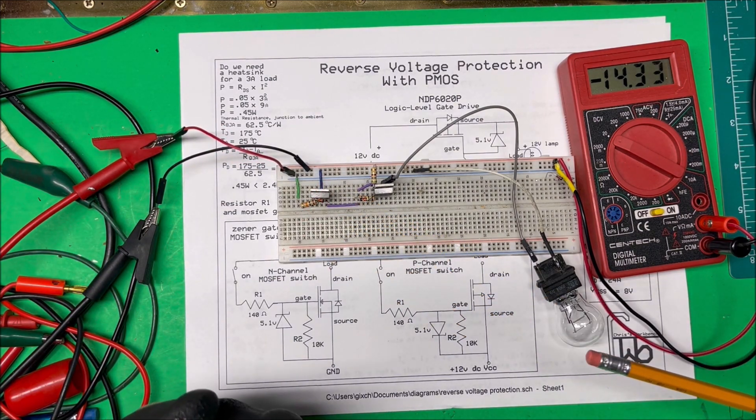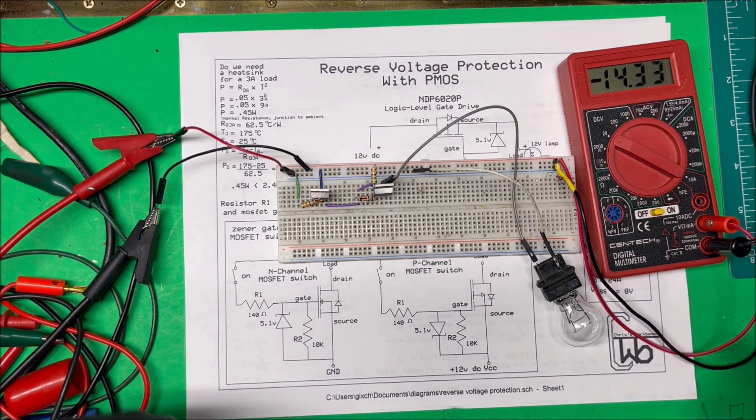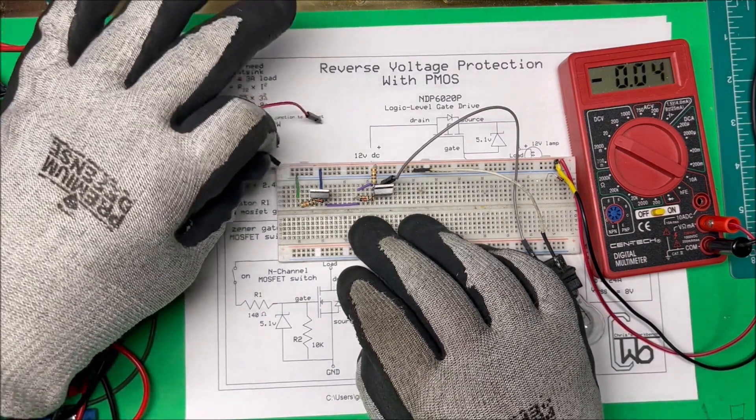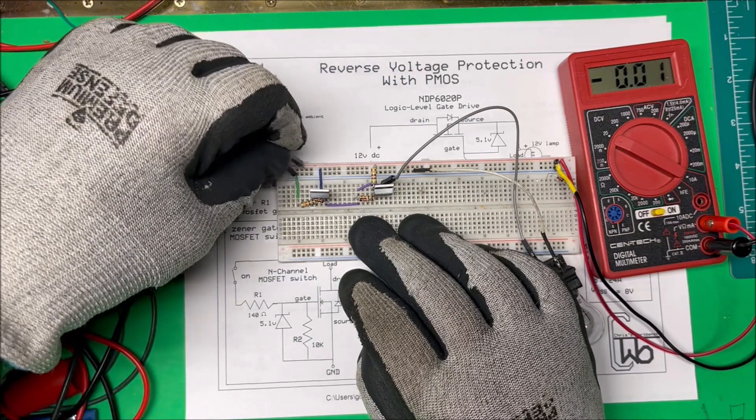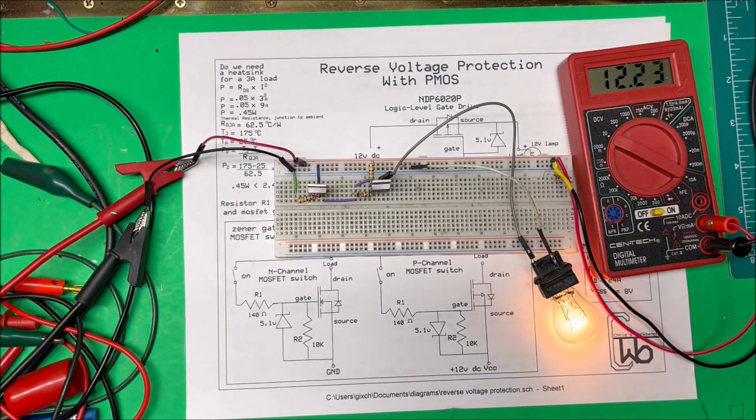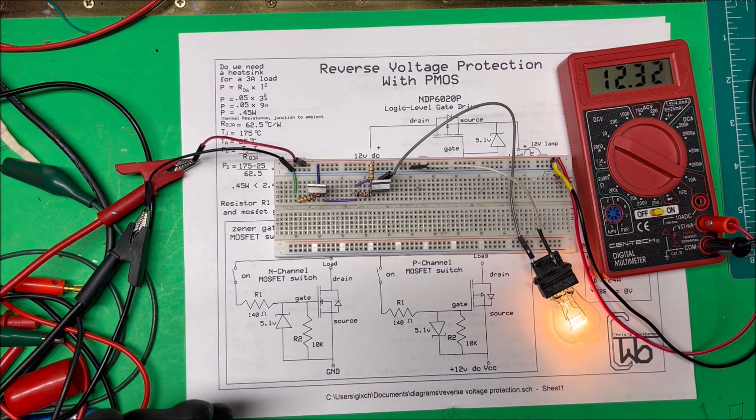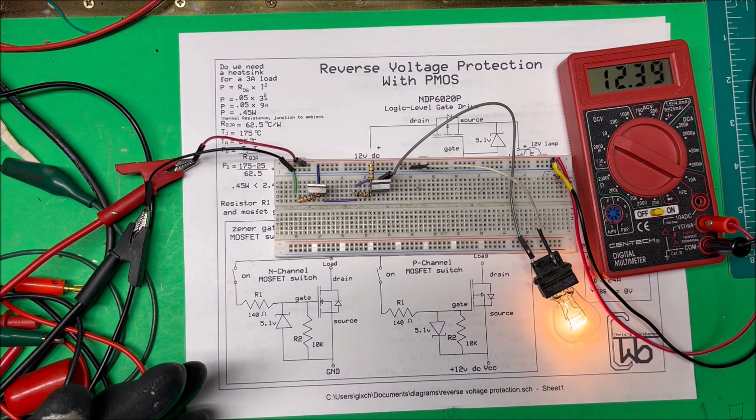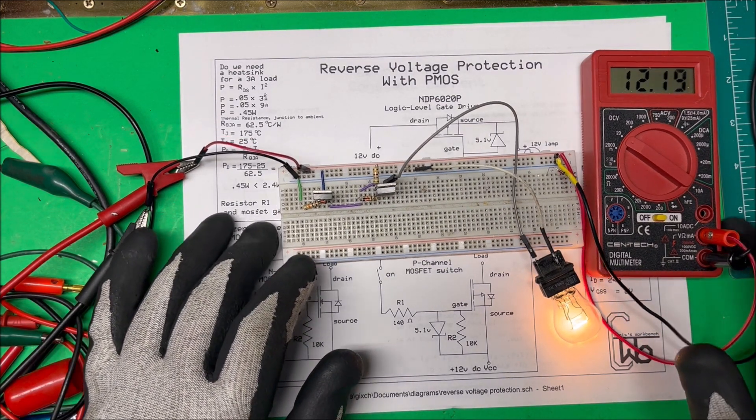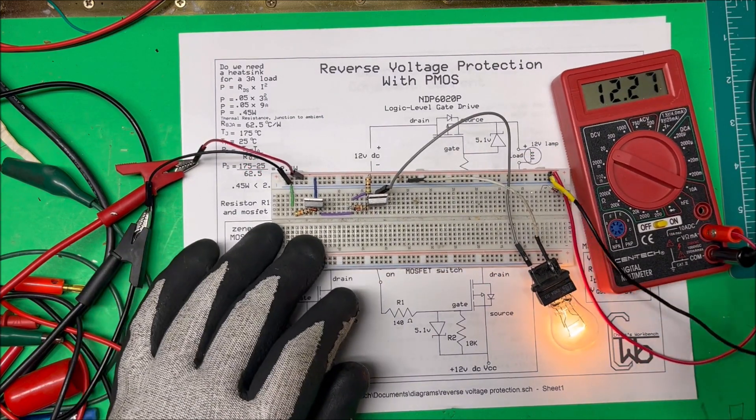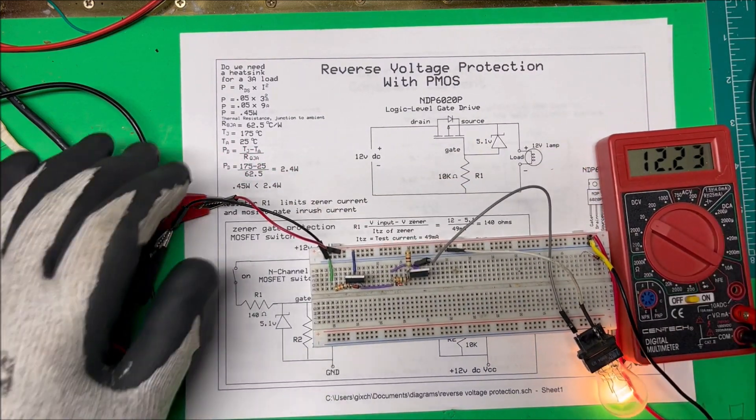This is just a good circuit to use to keep you from doing that. So I can put it back in the proper way and the light will come on. Very good. That's reverse voltage protection, just an easy way to do it. Oh, one more thing here.